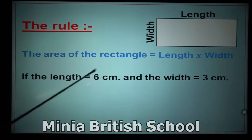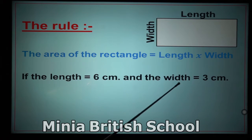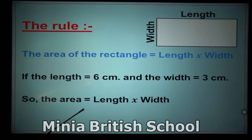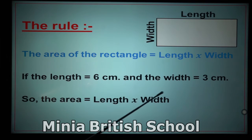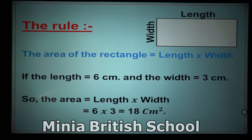If the length of this rectangle equals 6 centimeters and the width equals 3 centimeters — don't forget to write the rule. The rule says: the area equals length times width. Substitute: length equals 6, width equals 3, so write 6 times 3. From the times tables, 6 times 3 equals 18 square centimeters. Don't forget the unit and don't forget the rule.